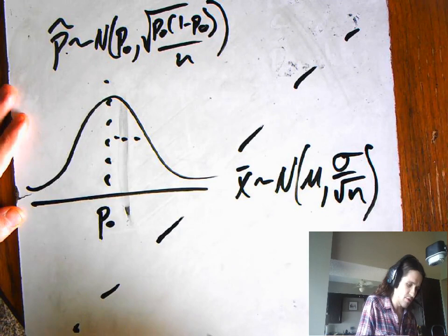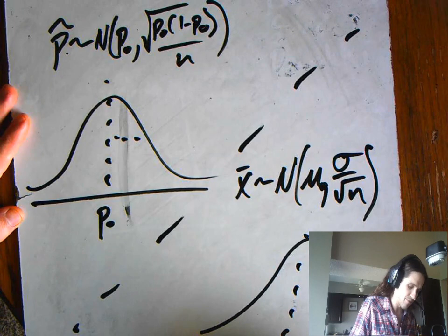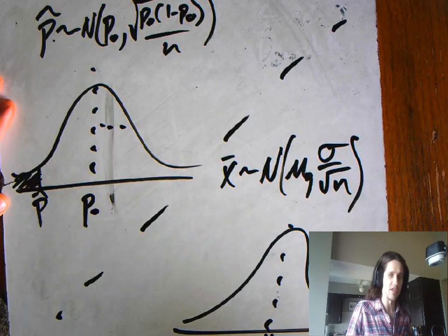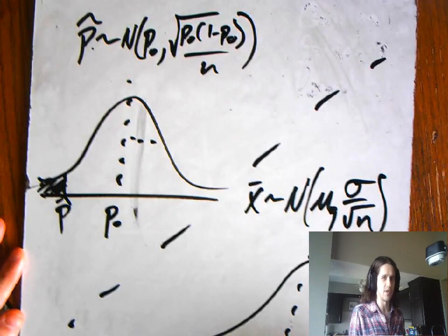And we can say, okay, we'll put a little knot in there. How likely are these observed values, maybe some observed x bar or some observed p hat, how likely is it to get a result that extreme or more extreme if the claim about the mean or the proportion is true?